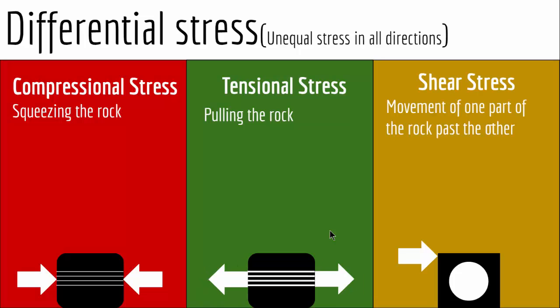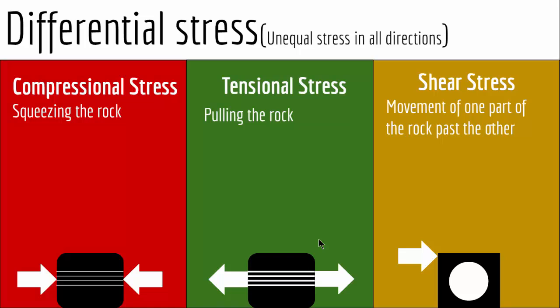The last type of differential stress is shear stress — the movement of one part of the rock past the other. If you move one part while the other stays still, that is shear stress. A circular grain under shear stress will turn into an ellipse. To summarize all three: under tensile stress, grains shorten 90 degrees to the stress and elongate parallel to it; under compressional stress, grains fatten 90 degrees to the stress and shorten parallel to it. That is how differential stress can deform a rock and anything in it.